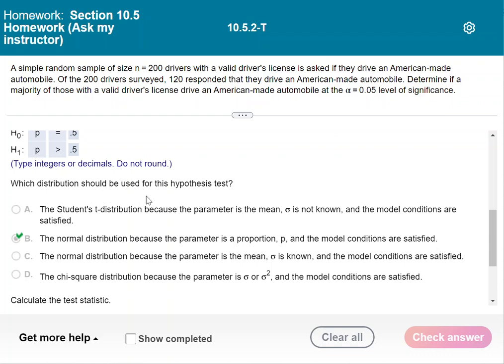Which distribution should be used for this hypothesis test? So you've got the normal distribution because the parameter is a proportion, P, and the model conditions are satisfied. So remember, with proportions, you don't need...